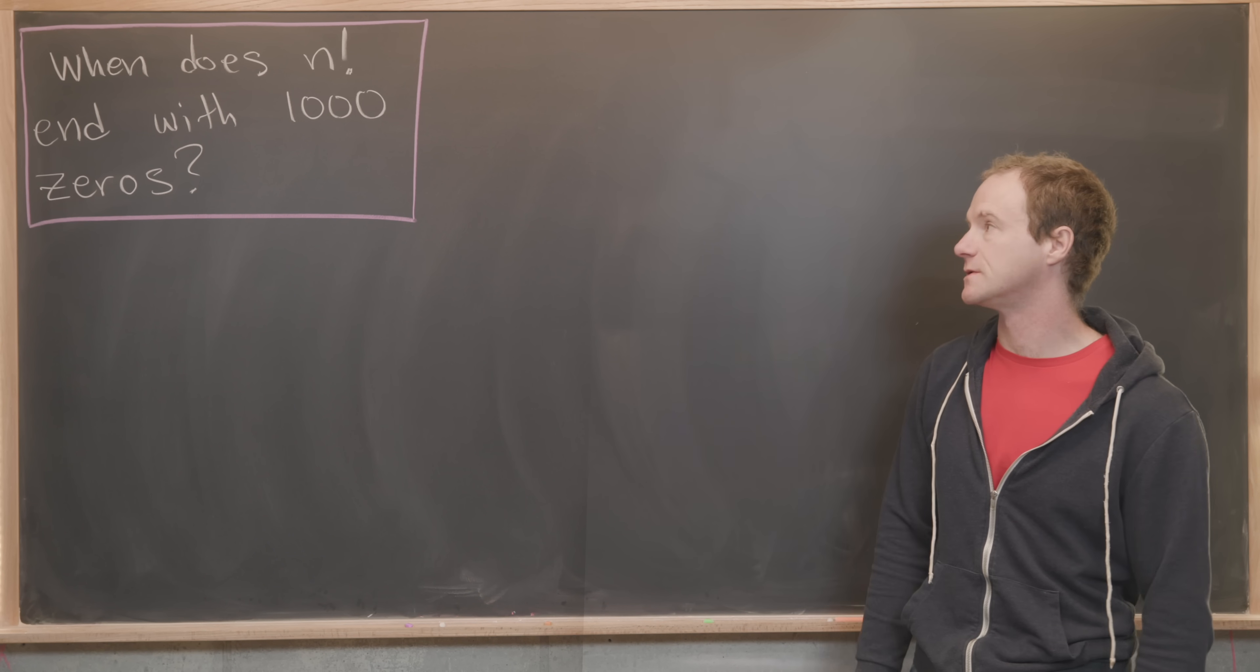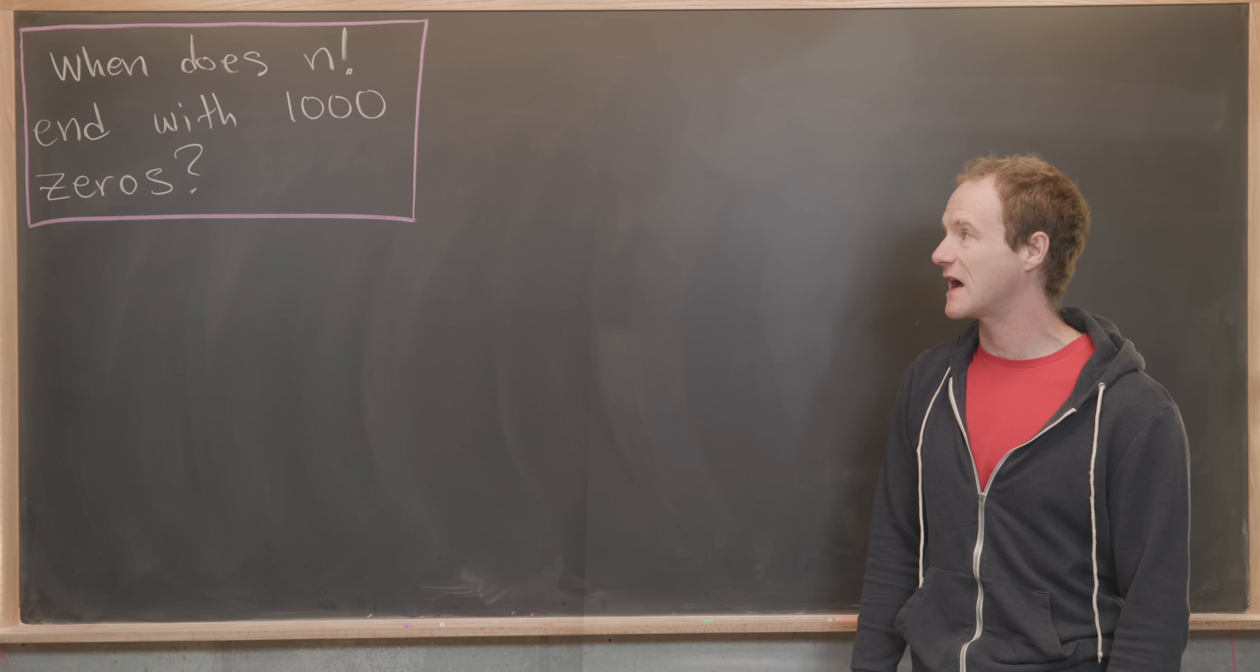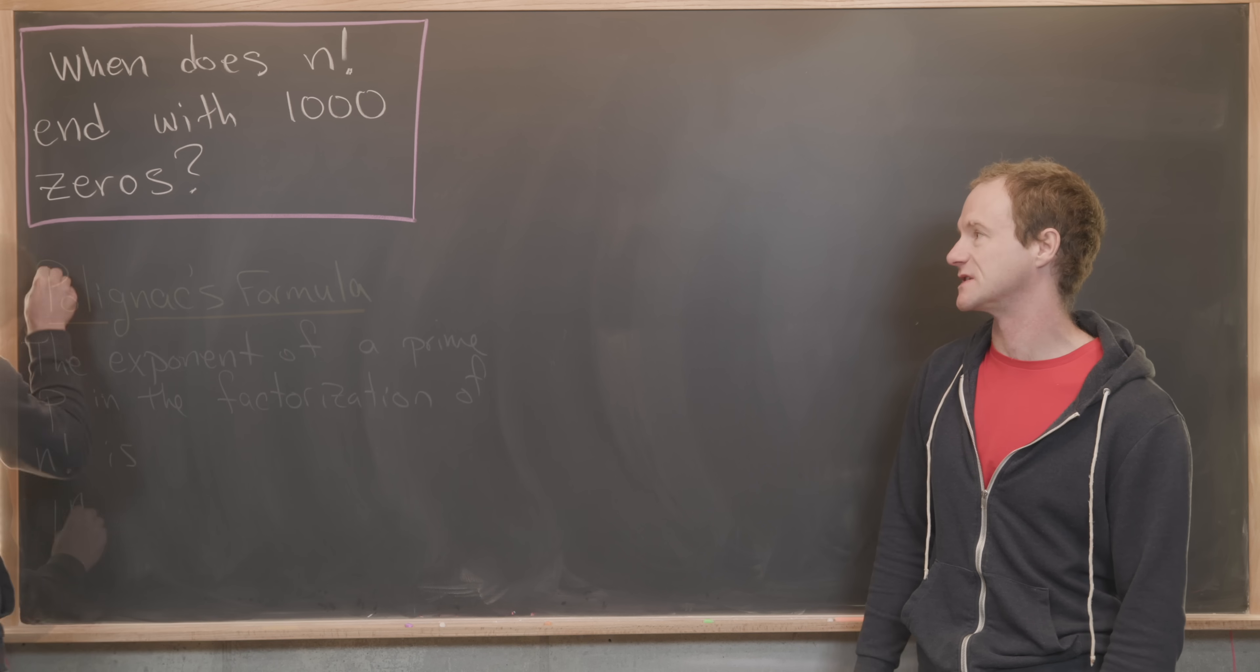Here we're going to look at an interesting little number puzzle. Our goal is to answer the question: when does n factorial end with 1,000 zeros?